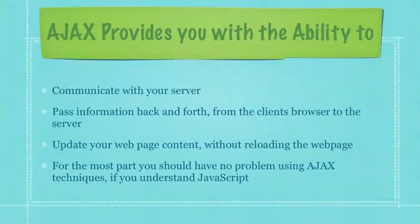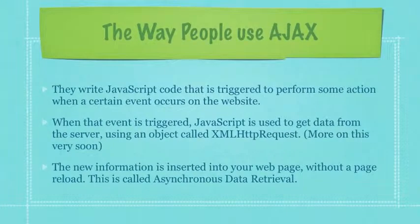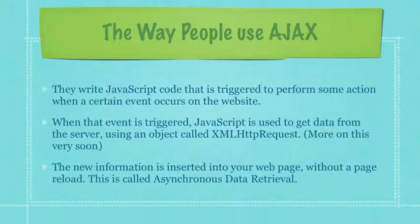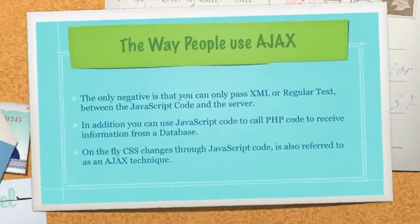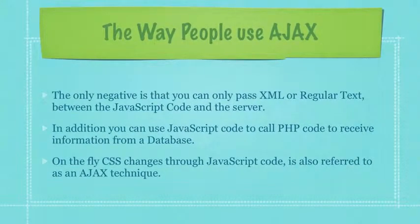It's just a series of techniques used to talk to the server and do multiple other different things within the browser without having to reload the web page. So how do people use Ajax? They write JavaScript code that is triggered to perform some action when a certain event occurs on the website. When that event is triggered, JavaScript is used to get data from the server using an object called XMLHttpRequest. The new information is inserted into your web page without a page reload. This is called asynchronous data retrieval.